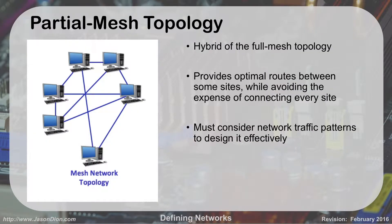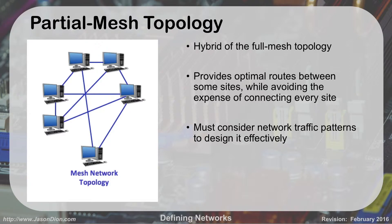Because meshes become so unwieldy, there's the partial mesh, where not everybody connects to everybody else, but high-priority routes connect to each other. This gives optimal routing between some sites while avoiding the expense of connecting every site, and you consider traffic patterns when designing it. For example, in a company with six locations, a small office in Fargo, North Dakota might route through Chicago to reach the D.C. server, while the D.C. and New York servers — which carry heavy traffic — have direct connections to multiple sites. Not everybody connects to everybody, but high-priority sites have multiple connections.